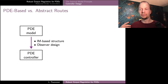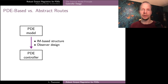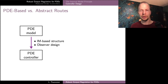This division between PDE-based and abstract controller design is of course very general and can be applied to many control problems. But I want to spend a little time discussing this division in the context of the robust output regulation problem, because I feel this problem has some unique features which contribute to the choice of which path to take.